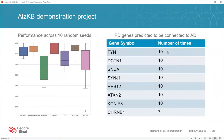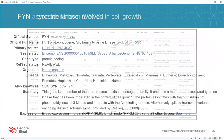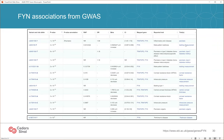Here are the genes we found, looking at the number of times across 10 random seeds that they were identified — seven or eight were found consistently across all 10 seeds. I'm going to focus on one of them as an example. These are all PD genes for which there is no GWAS evidence that they're involved in Alzheimer's. I'll focus on FEN — a tyrosine kinase involved in cell growth, associated with Parkinson's disease. Looking at the GWAS catalog for SNPs in this gene, the top phenotypes are things like psoriasis, balding, type 2 diabetes, some eye phenotypes, and Parkinson's disease with a p-value of 3×10⁻⁸. Alzheimer's disease does not show up in this table of GWAS results for the FEN gene.